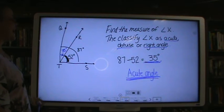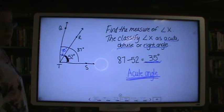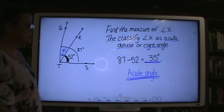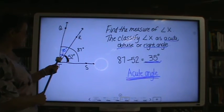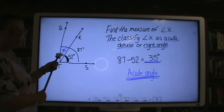Find the measure of angle X. Classify the angle X as acute, obtuse, or right angle. Angle X is over here. I gave the answer in blue. They told you angle QTS is 87 degrees.